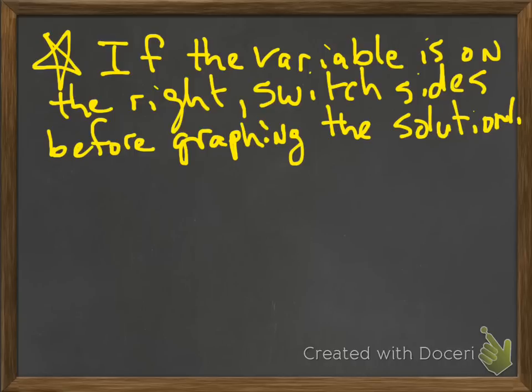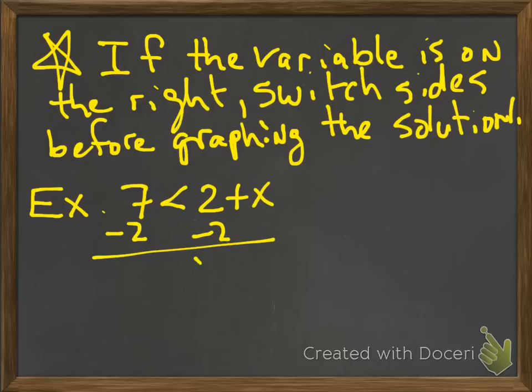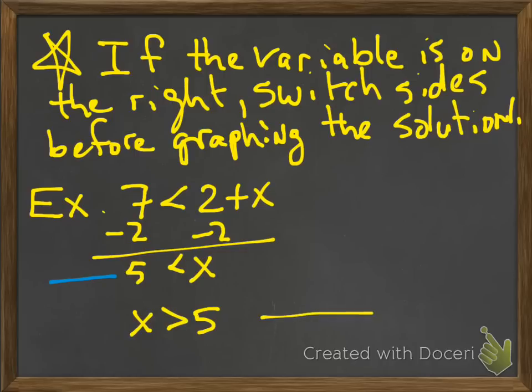All right, so my last thing I want to make note of here. If the variable is on the right side, switch sides before graphing the solution. And there's a good reason to that. You'll avoid little mistakes. Okay, so for example, let's look at this problem. 7 is less than 2 plus x. So you subtract 2, that's not a hard part. You got 5 is less than x. A lot of times people will graph that wrong. So what I tell you to do is switch it. So I've got my x and 5, switch them. But make sure the inequality, make sure the inequality points the same way it was here. So if I'm saying it was pointing to the 5, it still points to the 5. Then graph.